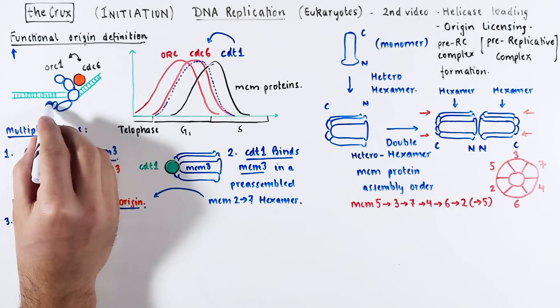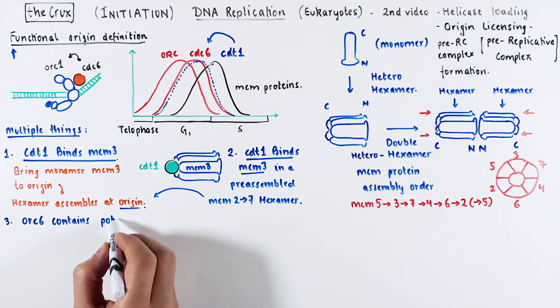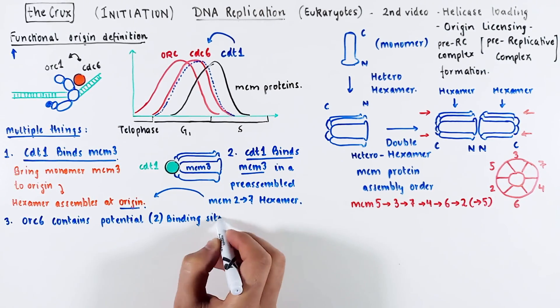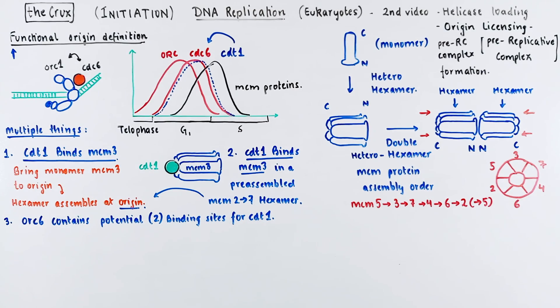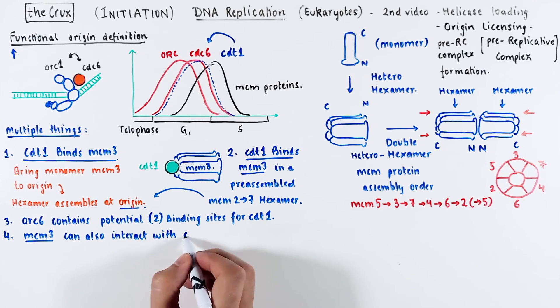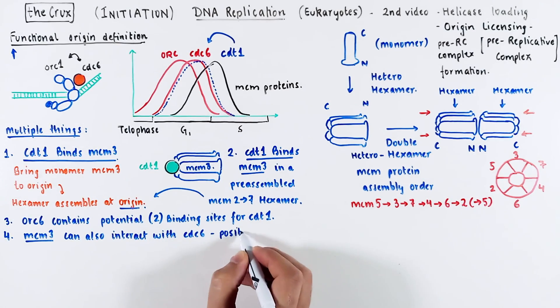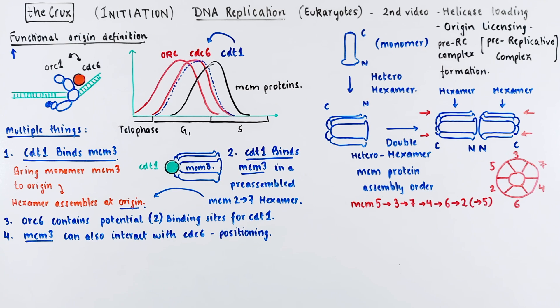Point 3, the orc-6 monomer in the orc complex has two binding sites for CDT-1. Point 4, MCM-3 also interacts with CDC-6. And that aids in the positioning of the helicase hexamer. Regardless of how the helicase is brought to the origin of replication, maybe it is preassembled or assembled afterwards, the picture will look something like this.